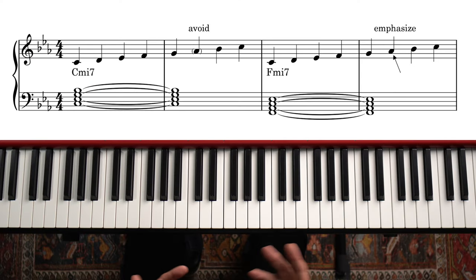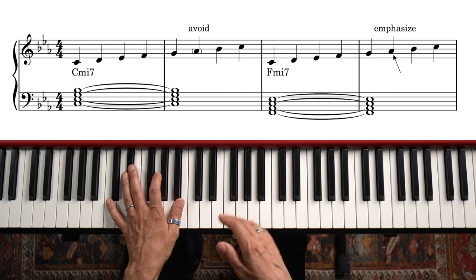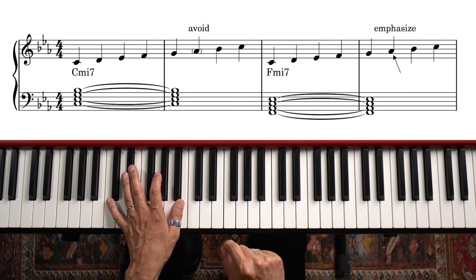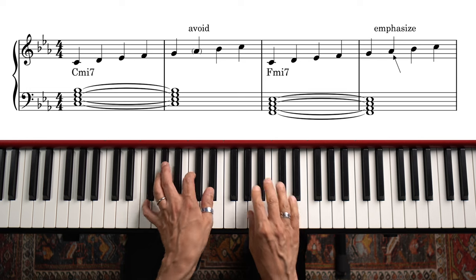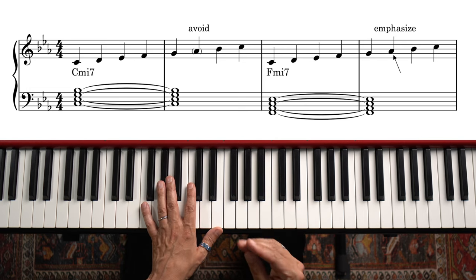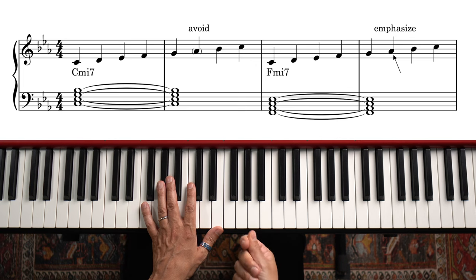The second refinement of key center playing pertains to choosing specific notes of the scale in response to the underlying chord. This is kind of a hybrid between the key center and chord scale approaches. Here we don't switch to a different scale when the chord changes, but we emphasize different notes of the same scale depending on which chord we're playing on. For example, if I play C natural minor over both C minor seven and F minor seven, I might avoid the A-flat on the C minor seven chord because it contradicts the basic sound of the chord, but then emphasize it when the chord changes to F minor seven because now the A-flat is the third of the chord and therefore a really good choice. So the general idea here is to imply the underlying chord progression by strategically choosing notes from the tonic scale that are a good representation of the chord of the moment.